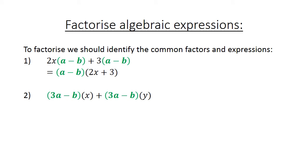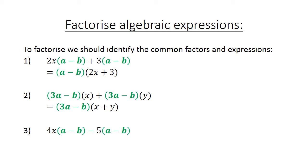The common factor here is (3A minus B). Equals (3A minus B), and what is left is (X plus Y). 4X, again (A minus B), in brackets minus 5. The common factor comes first: in brackets (A minus B), and we have in brackets (4X minus 5).